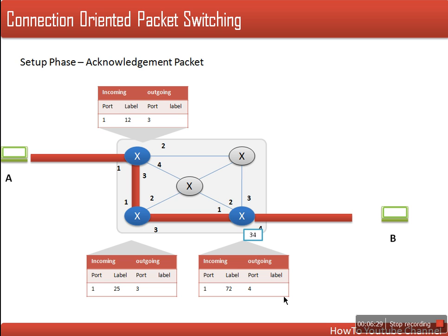So this router will store 34. After storing 34, this router would know that if a packet is coming with label 72 it has to be forwarded to port 4 with this label. The same will apply vice versa: if a packet is coming with this label for this port — because this is part of the previous communication — this label will be changed to 72 and it will be sent to the next router according to this information, port 1.